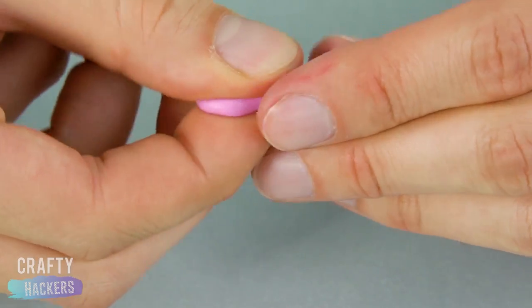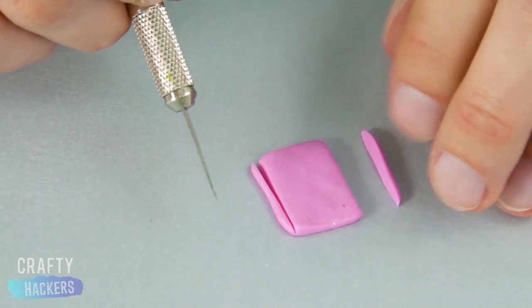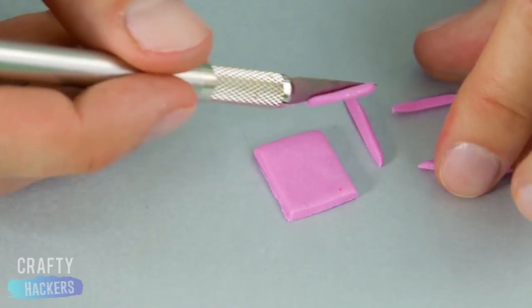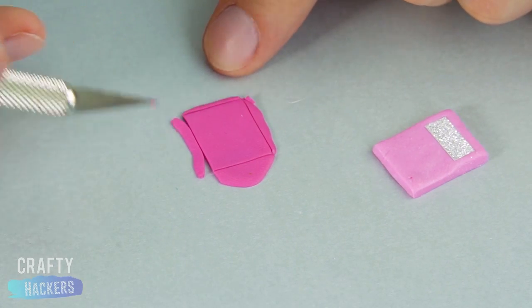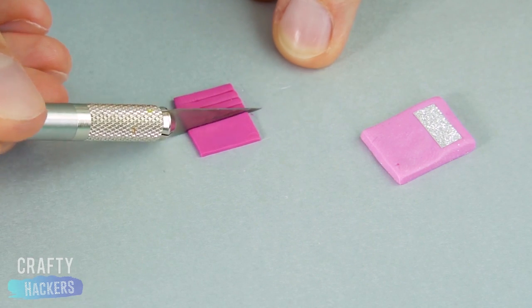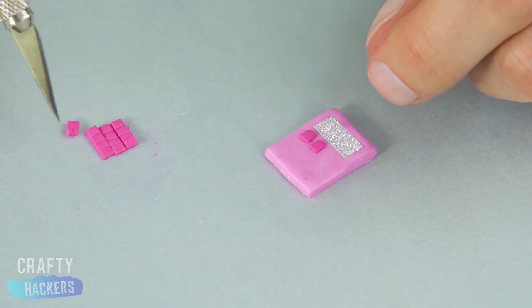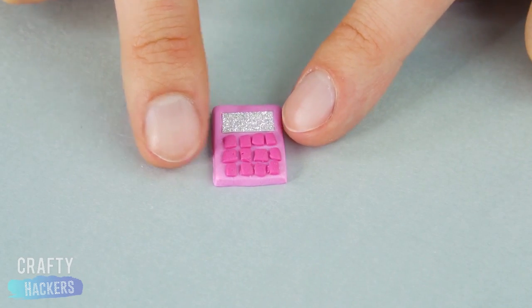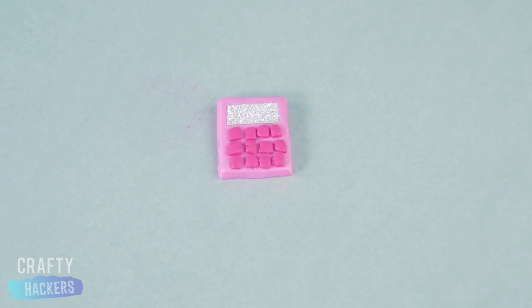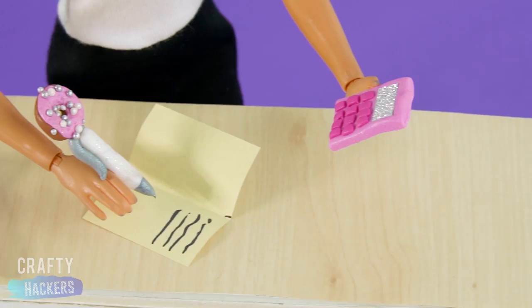How about a calculator? Flatten a piece of pink polymer clay and cut it into a rectangle shape. Cut a tiny rectangle from your glitter paper and add it to the top as the window. For the buttons, flatten and cut a piece of hot clay. Cut in a grid shape, like this. Then, carefully apply the buttons to the calculator. Now Barbie can do her math homework, too!